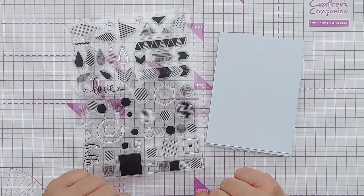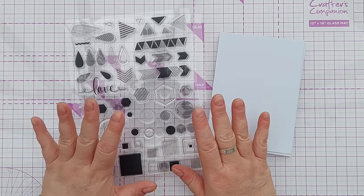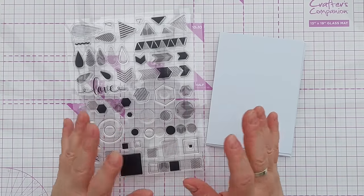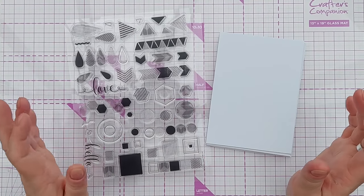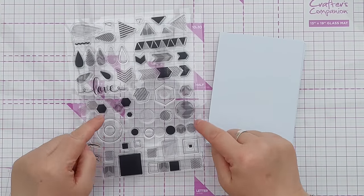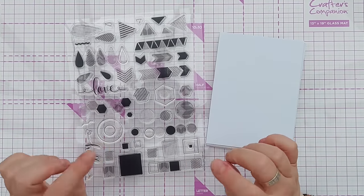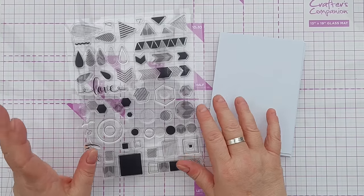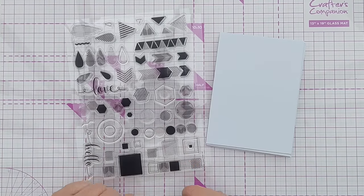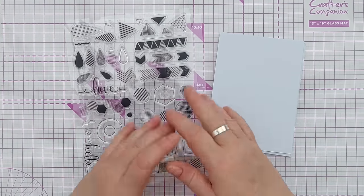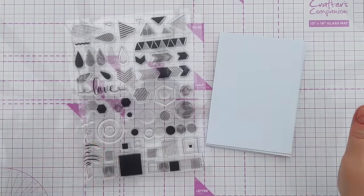So I thought I would do a few videos using geometric stamps from this stamp set to share some ideas on how we can get the most out of stamps like this. So don't worry if you haven't got this stamp set. If you've got circle stamps, arrow stamps, hexagon stamps, teardrop stamps, triangle stamps, square stamps, you'll be able to join in.